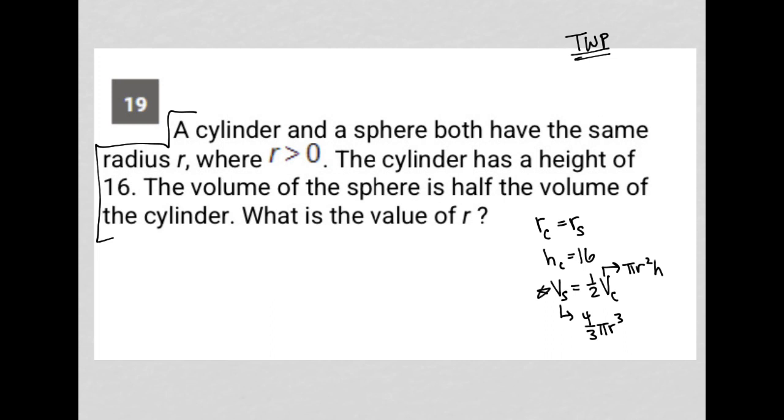So I'm going to recreate this equation, my translation from this sentence here, basically, that says V_S equals one-half V_C. And I'm going to replace it with what I know V_S is and what I know V_C is. So that becomes four-thirds pi R cubed equals one-half pi R squared H.